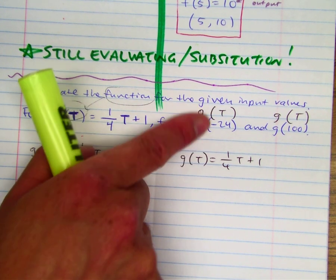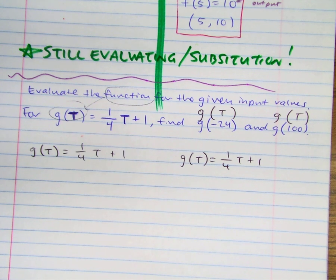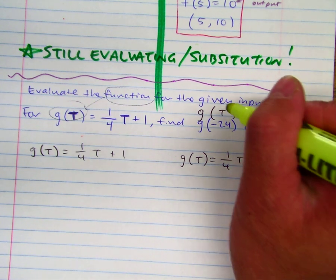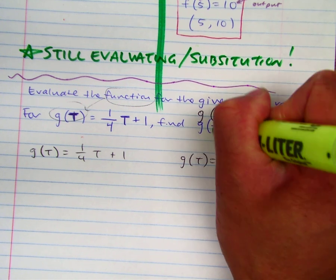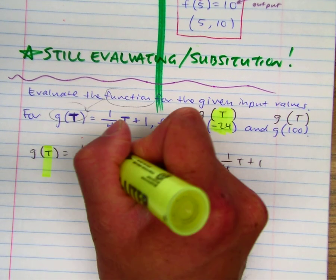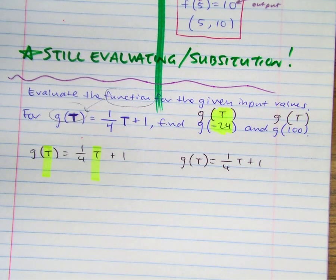This is the same, this is different. In this input, it's telling us to replace every t value with negative twenty-four. Let's do that.